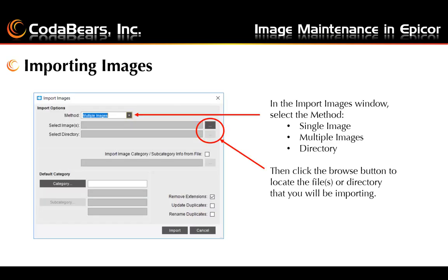Importing images is fairly simple. After you open the Image Maintenance, you can select Import Image. The method you're going to choose is either a single image, multiple images, or a whole directory. Depending on what you select as your method, the fields below it will become enabled.